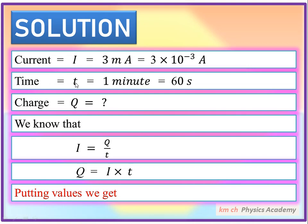Time is equal to t, which is 1 minute. The standard unit is seconds. 1 minute is equal to 60 seconds, so this means 60 seconds.